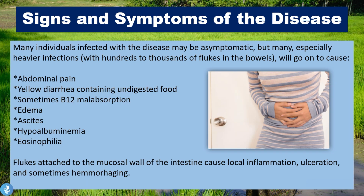Now let's talk about some signs and symptoms of the disease. Many individuals infected may be asymptomatic, but many — especially those who have heavy infections with hundreds to thousands of flukes in their bowels — will go on to experience abdominal pain and yellow diarrhea which contains undigested food. Sometimes the patients may also suffer from B12 malabsorption, because the duodenum is responsible for absorption of B12 and these intestinal flukes most commonly affect the first two parts of the intestine: the duodenum and the jejunum.